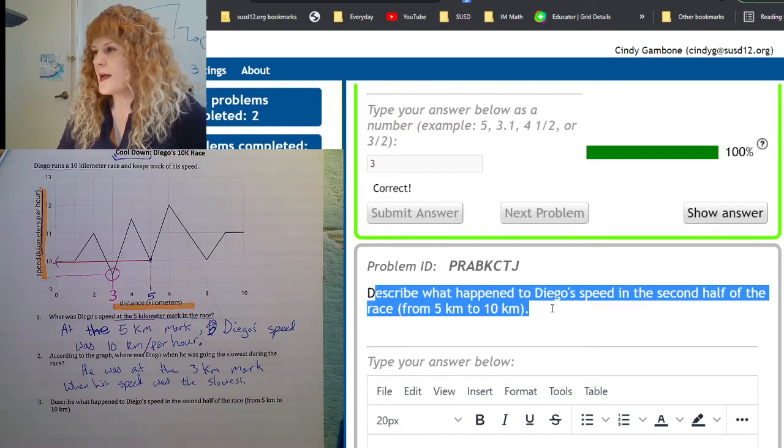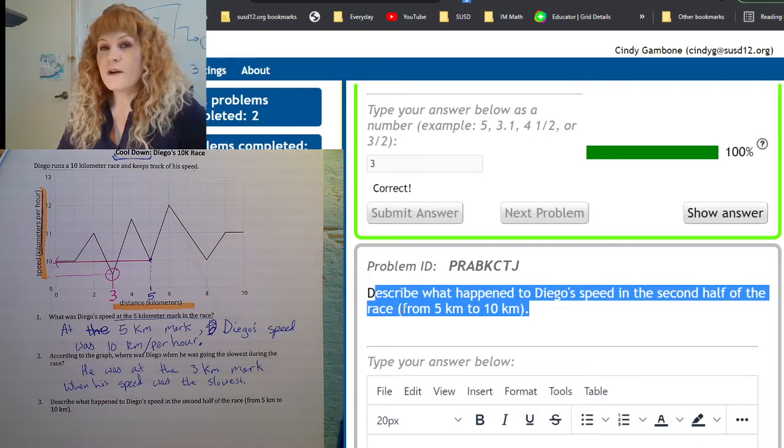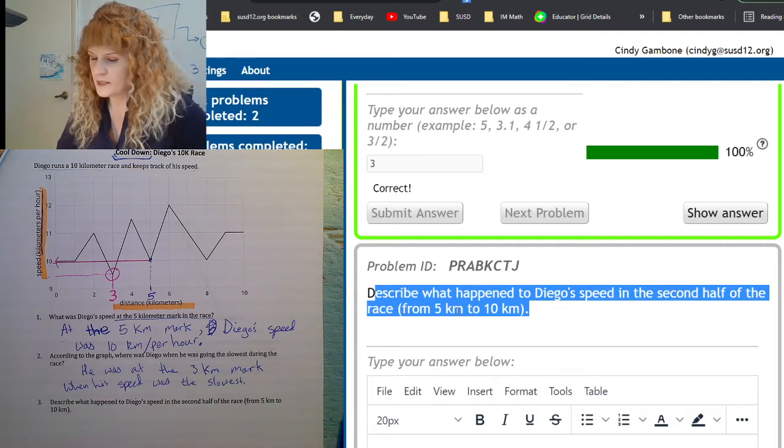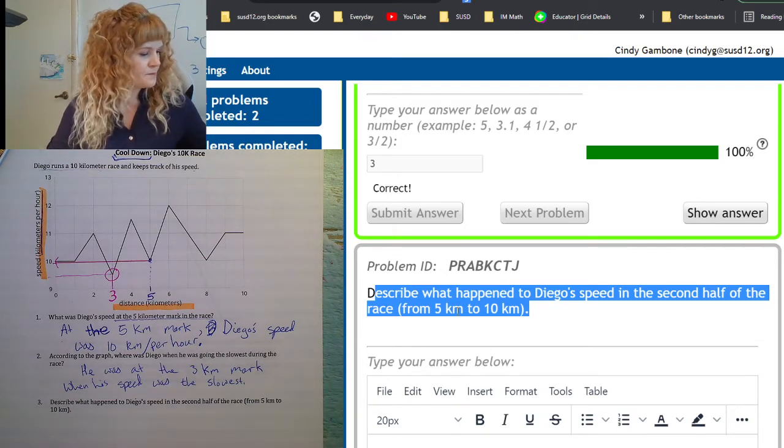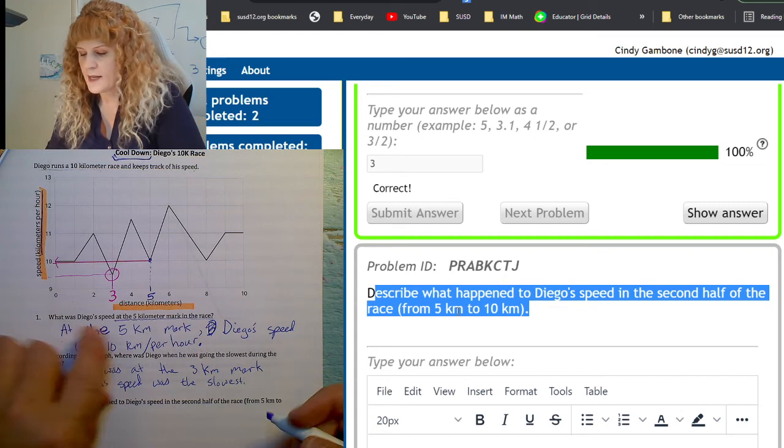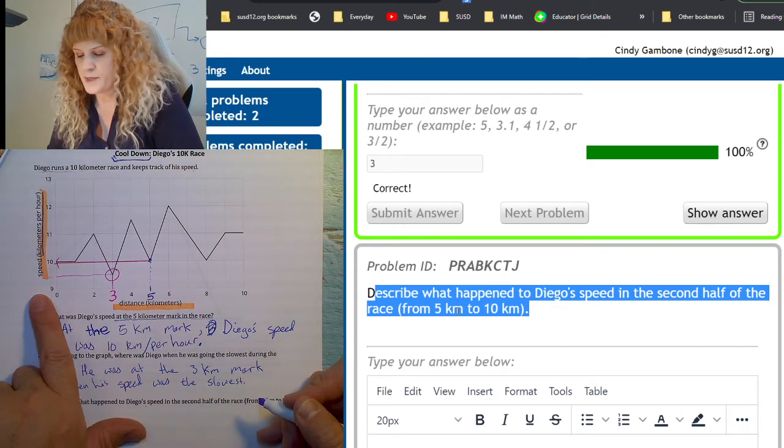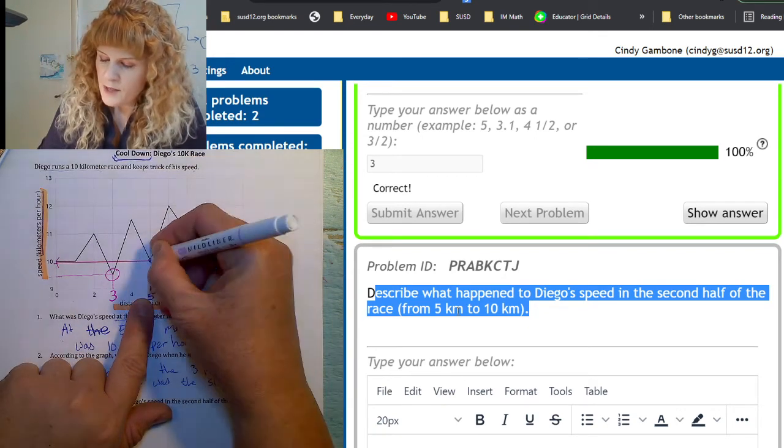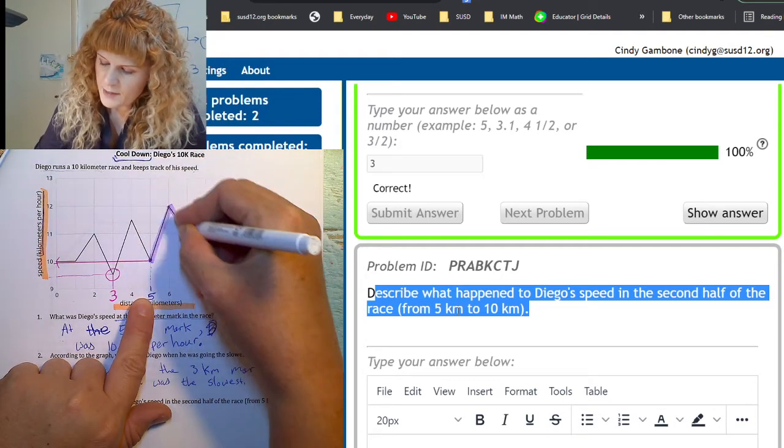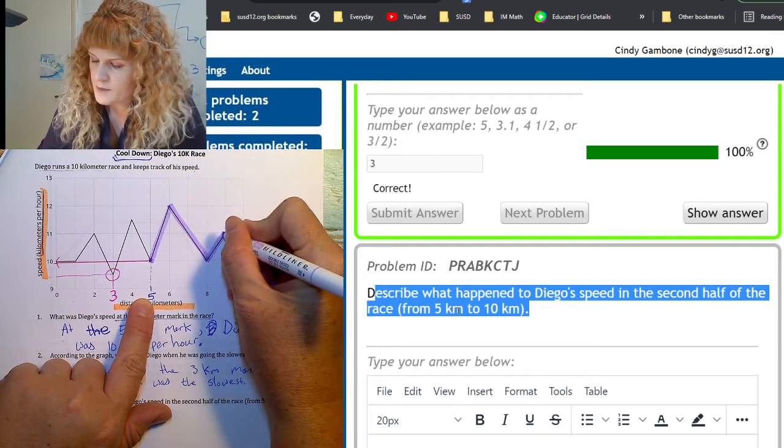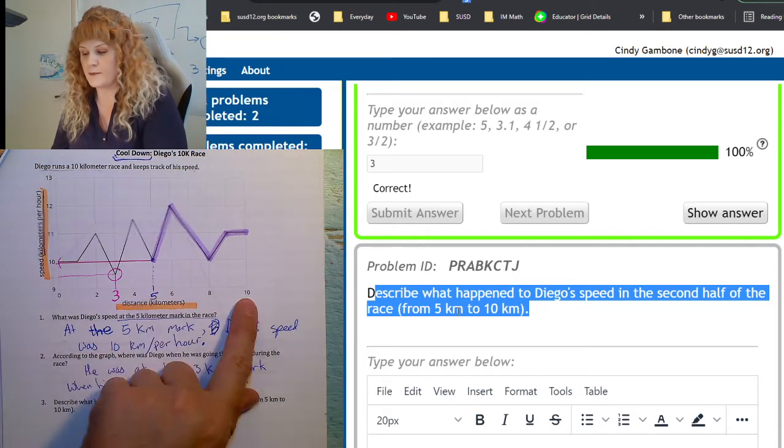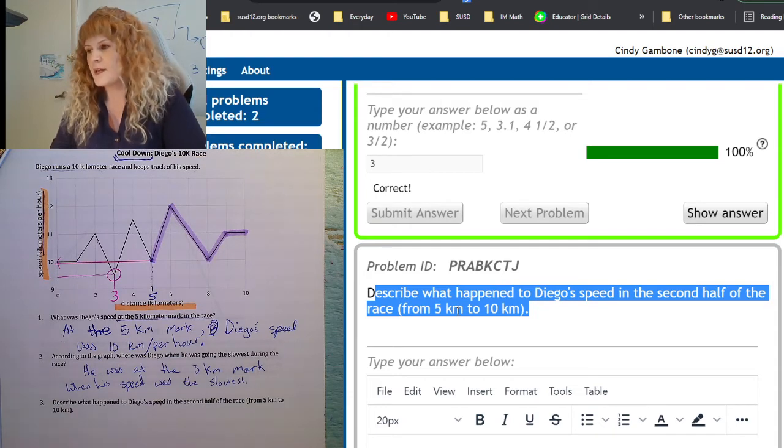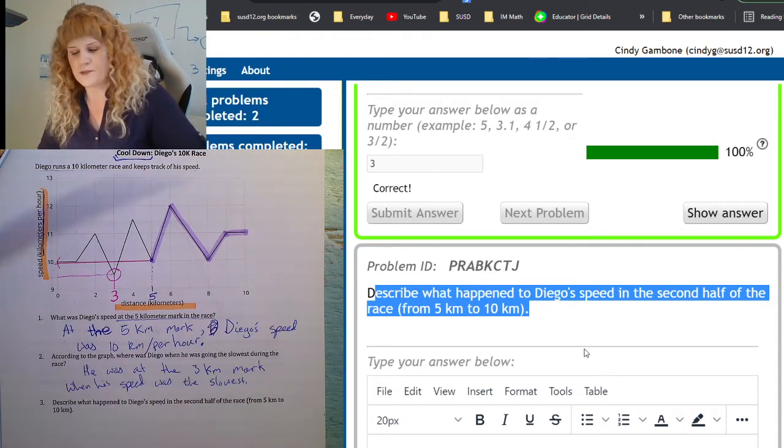Describe what happened to Diego's speed in the second half of the race from five kilometers to 10 kilometers. I'm going to highlight that portion on my graph. They said the second half of the race, not the first half from zero to five kilometers. We're only looking now at the second half from five to 10 kilometers, and I highlighted it purple. So let's explain what happens during that time.